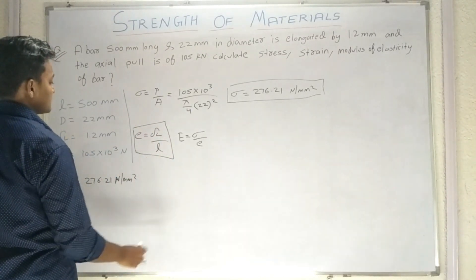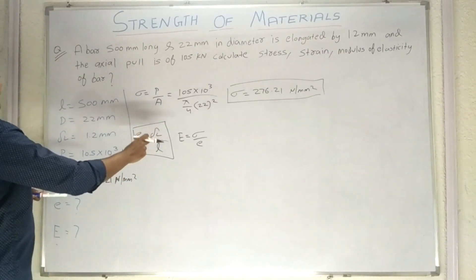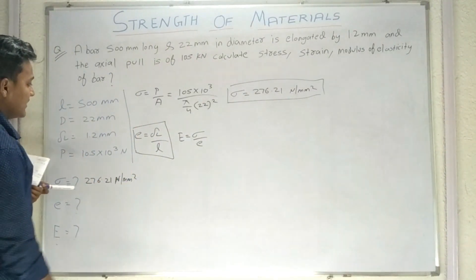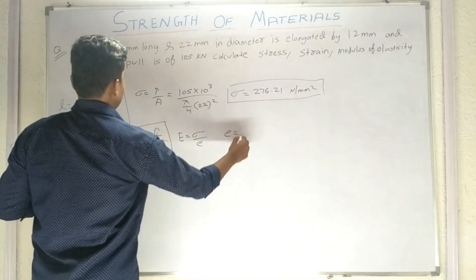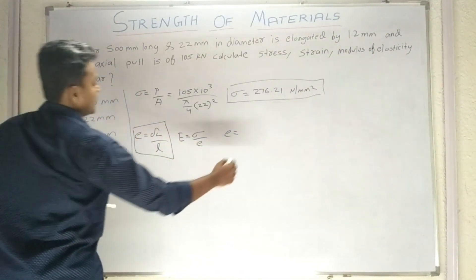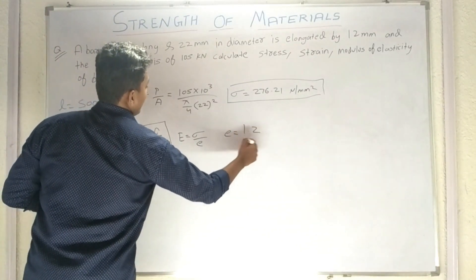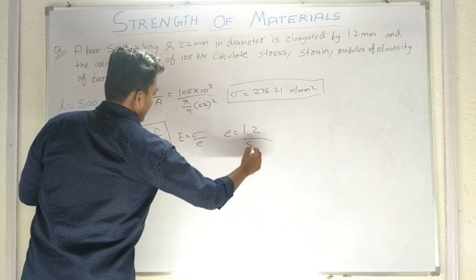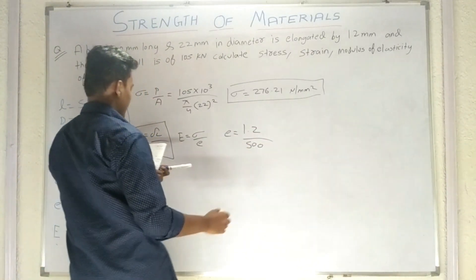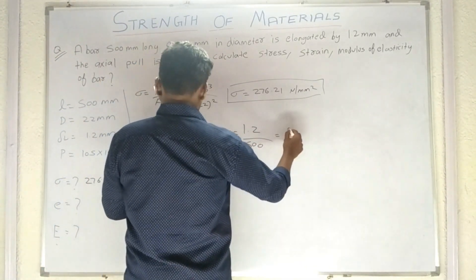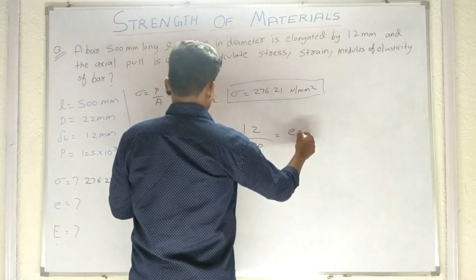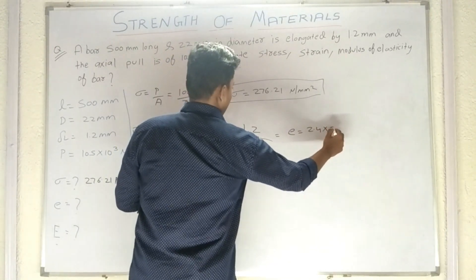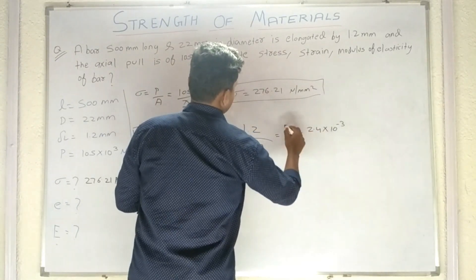hamare paas delta L bhi given hai aur L bhi given hai, so simply hamara e nikal jayega. So e equals to delta L 1.2 upon L is 500. So 1.2 upon 500 karenge, so aapko iska answer aayega